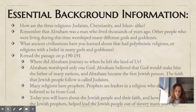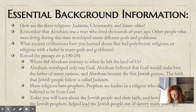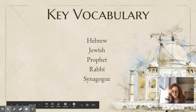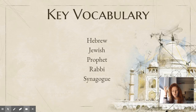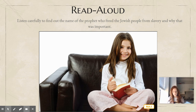Where did Abraham journey to when he left the land of Ur? To Canaan. Abraham worshipped only one God and believed that God would make him the father of many nations. Abraham became the first Jewish person, and the faith that Jewish people follow is called Judaism. Many religions have prophets — leaders in a religion who share messages believed to be from God. Today, you're going to learn about a Jewish prophet who helped lead the Jewish people out of slavery many years ago. Listen carefully to find out the name of that prophet and why it was important.